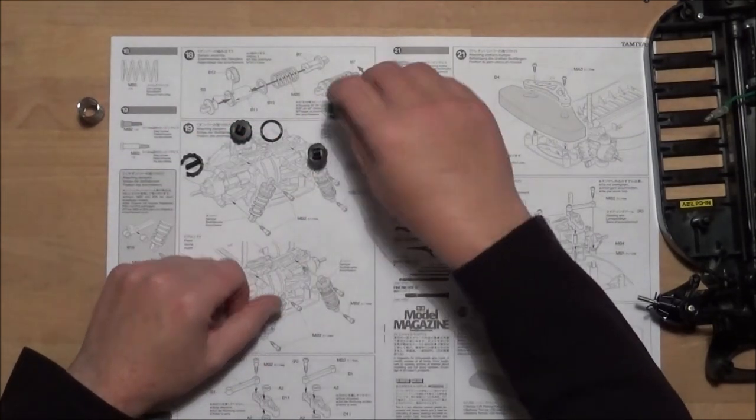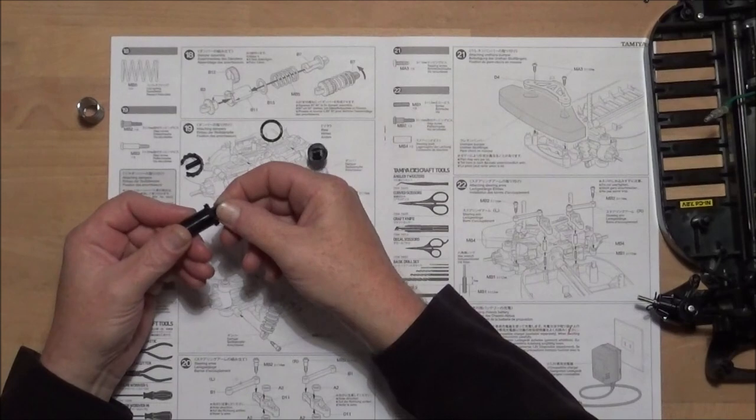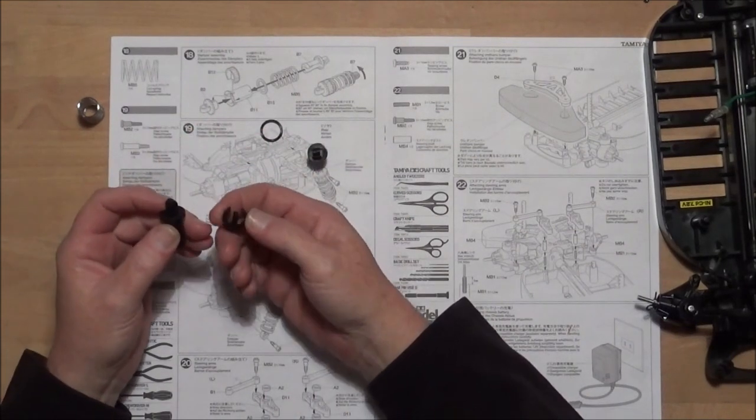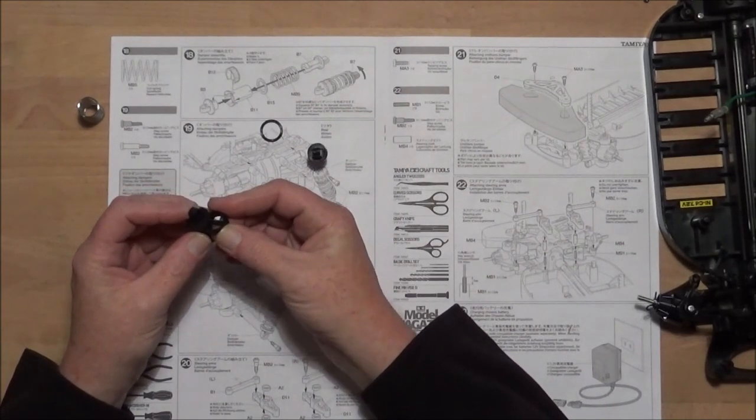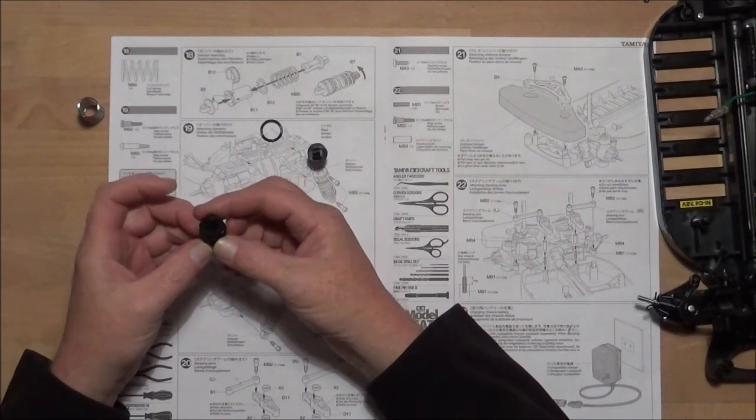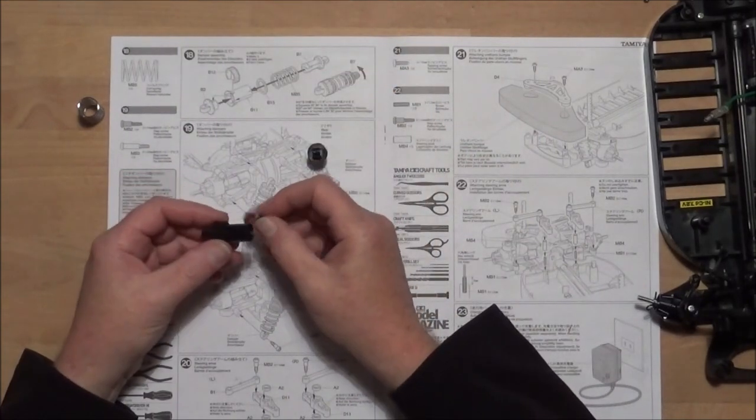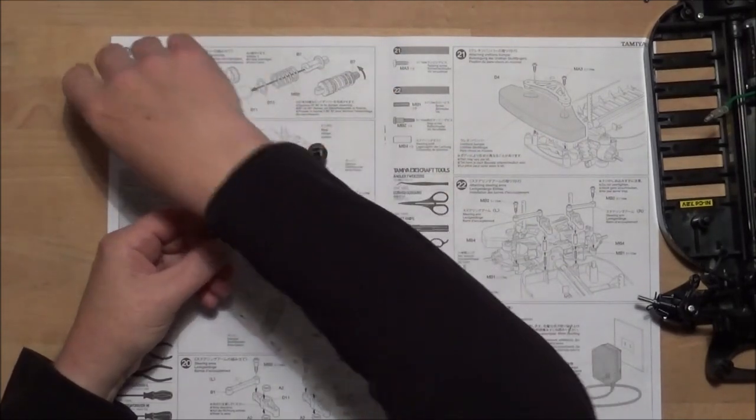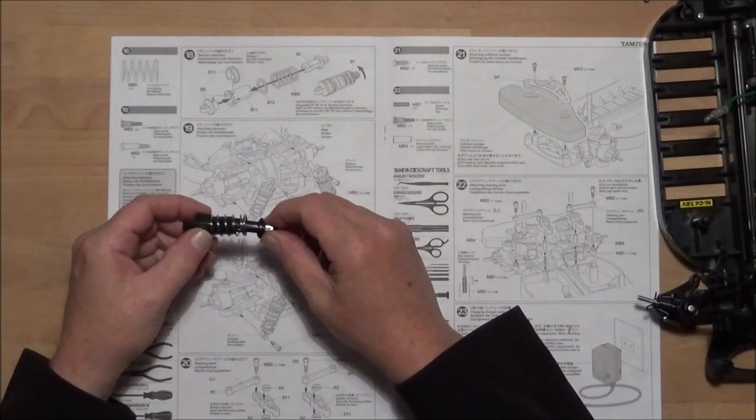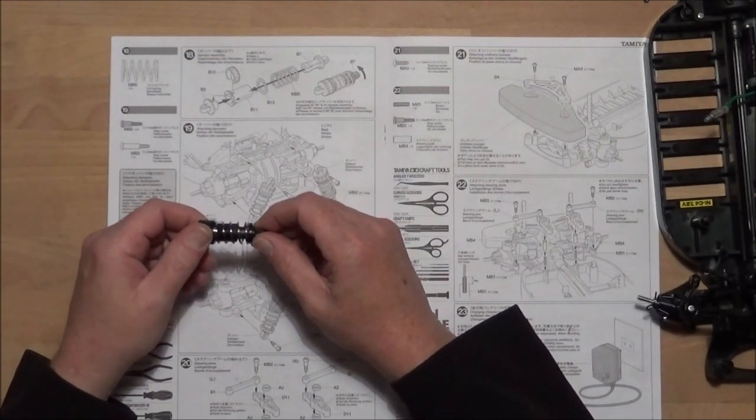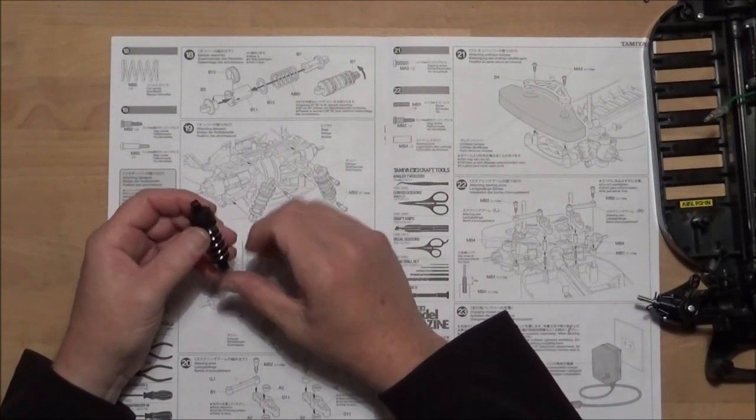It's just a case of sticking them all together so we get the top mount, line it up like so, the retaining clip shall we say, and simply pop it in there and click it, push it in. Then we get B15 and the spring and then B7, you just turn it round till it goes in and then turn it a quarter of a turn and that's your pogo sick.